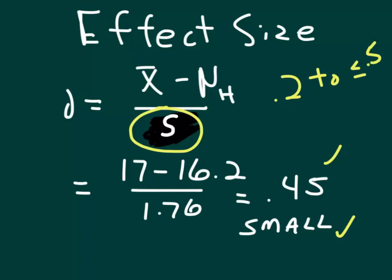The difference between this and our test statistic is that in the denominator, instead of having S x̄ or S divided by the square root of N, we just have S.